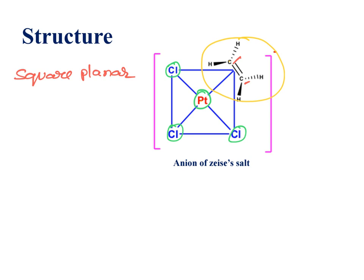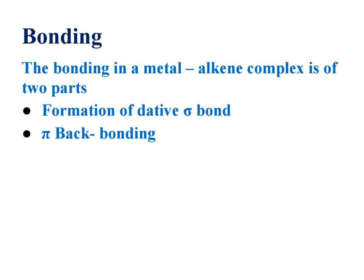Let's move on to the bonding. In Zeise's salt, three chlorine atoms donate electrons and form coordinate covalent bonds. But the interesting thing we have to discuss is with respect to the alkenes. When the alkene ligand is present, how the bonding pattern exists in the molecule, that we have to discuss.